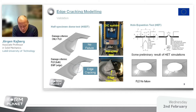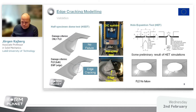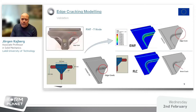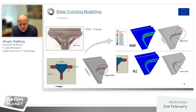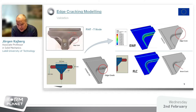Without the forming limit diagram alone, you have no failure. But if you include EWF results, you will see some eroding elements. This is validation for a real component formed by Fiat — there is an edge crack appearing to the right of this formed part. Without a forming limit diagram alone, you can only detect the inner crack, but it's impossible to predict the edge crack. So there is a very good reason to include the concept of fracture toughness when you're interested in predicting edge cracking.